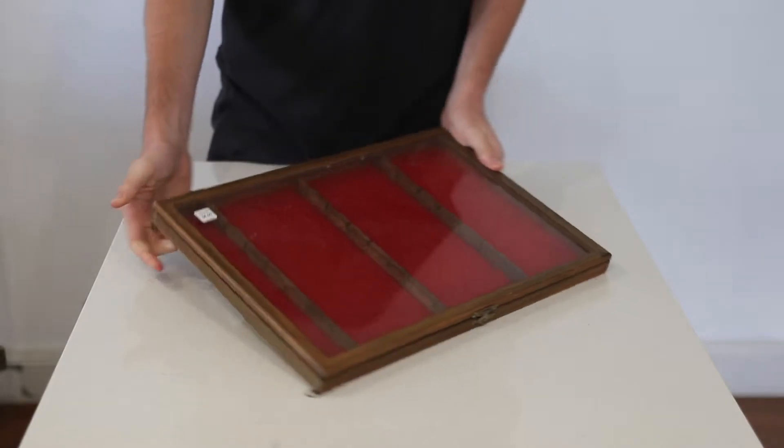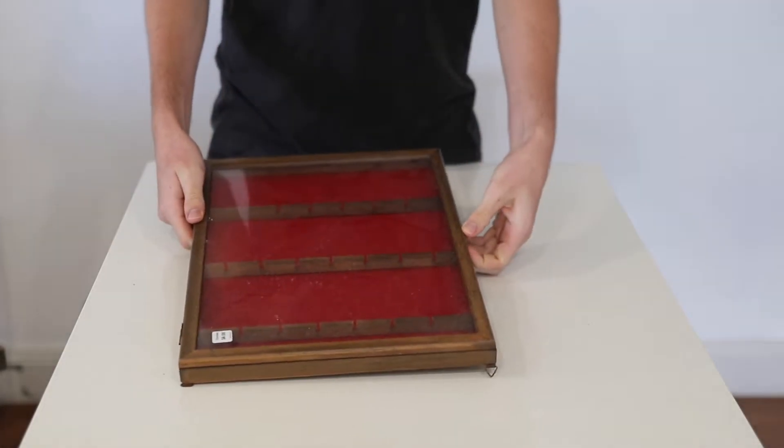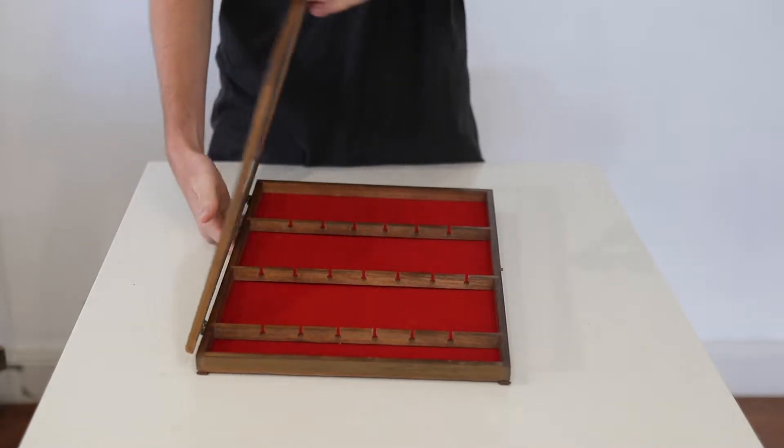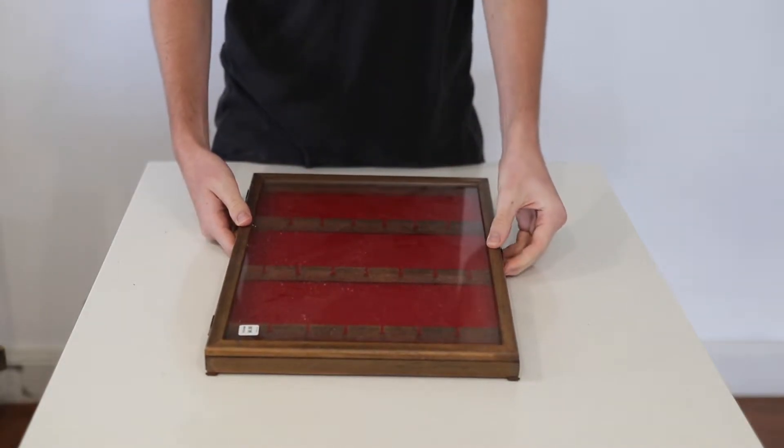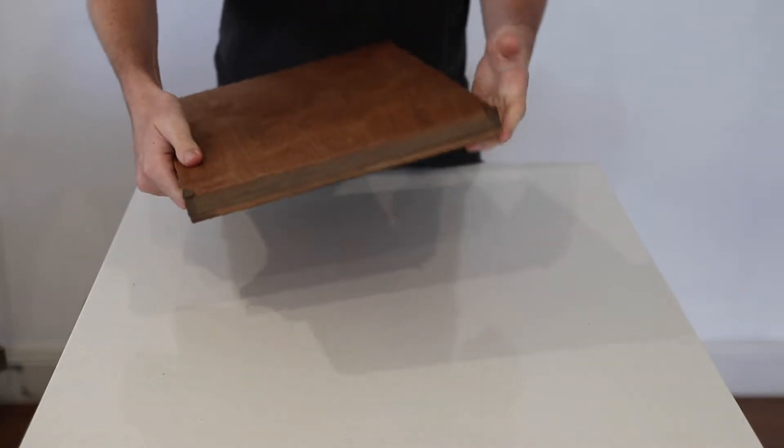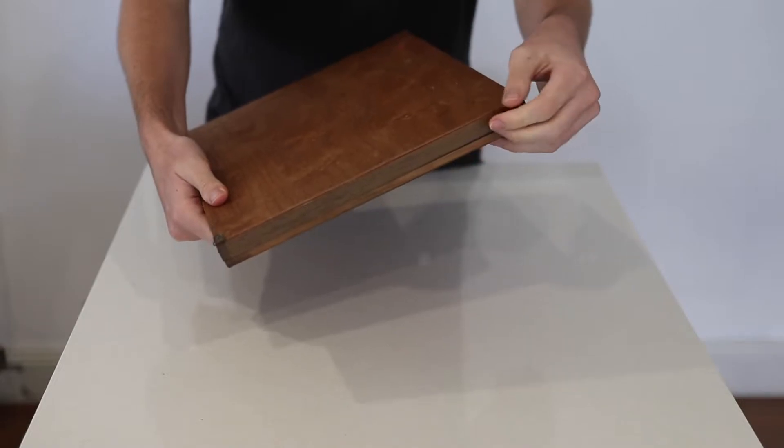Alright, so I recently found this old spoon display at a secondhand shop. As you can see it's got small grooves cut away in the bits of wood along the inside which would have had spoons displayed in it at some point, but when I came across it it was completely empty.